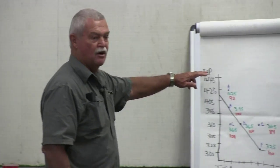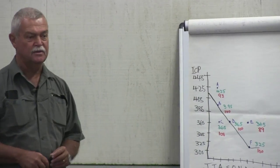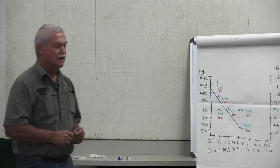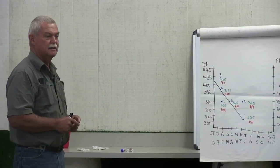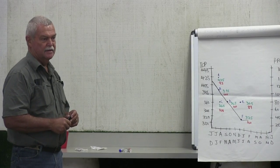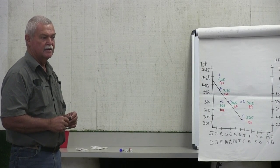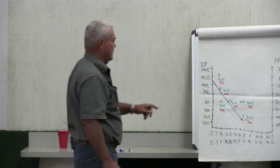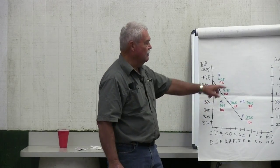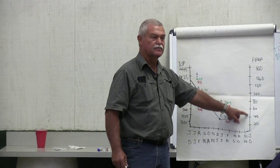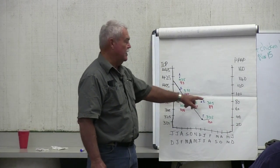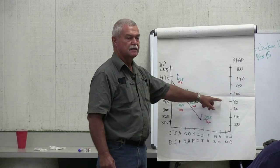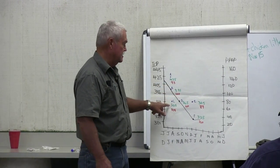What we talked about is that we can use inter-calving period — that is the period between two successive calvings — and in this case particularly the first heifers that calve for the first time and again the second time. If you take that inter-calving period and plot it on the graph, it's equivalent to days from calving to first cycle, which would equate to that inter-calving period if you added 285 days — that's the gestation period.